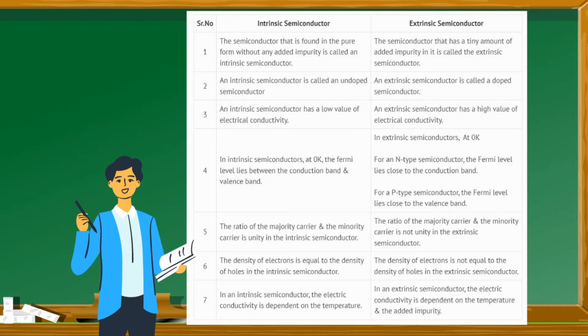Number 3: An intrinsic semiconductor has a low value of electrical conductivity. An extrinsic semiconductor has a high value of electrical conductivity.